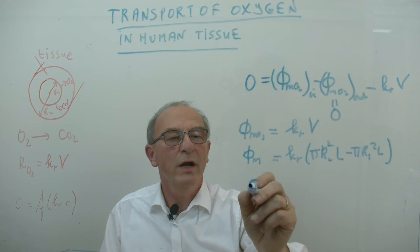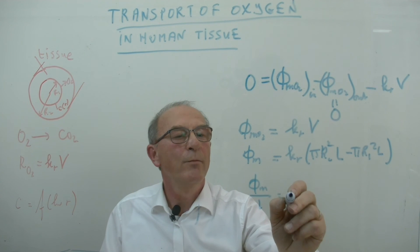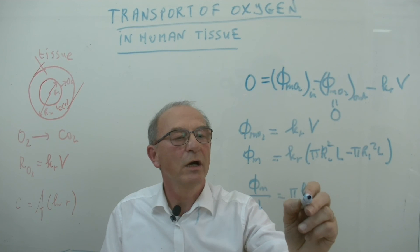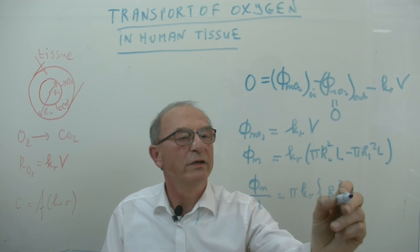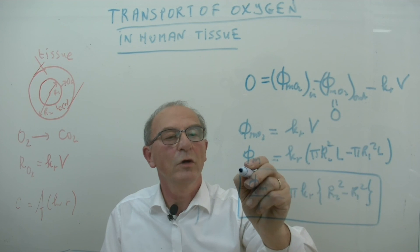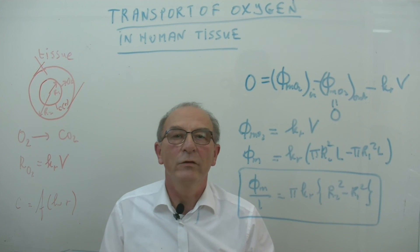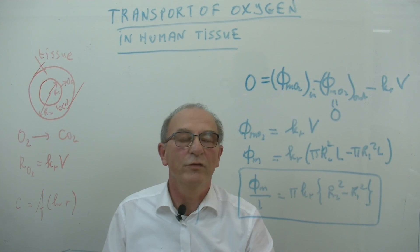If we rewrite this per unit of length, we obtain pi multiplied by Kr times R2 squared minus R1 squared. And this was the result he also obtained in his study. You can see that the final result you can already obtain by not choosing or deriving the concentration profile.